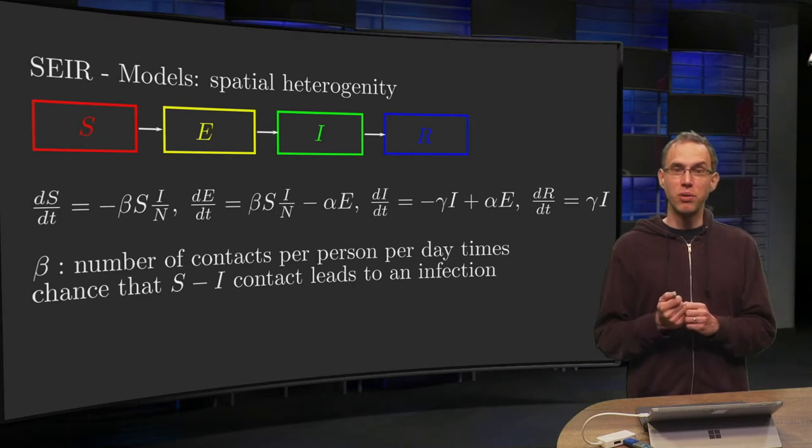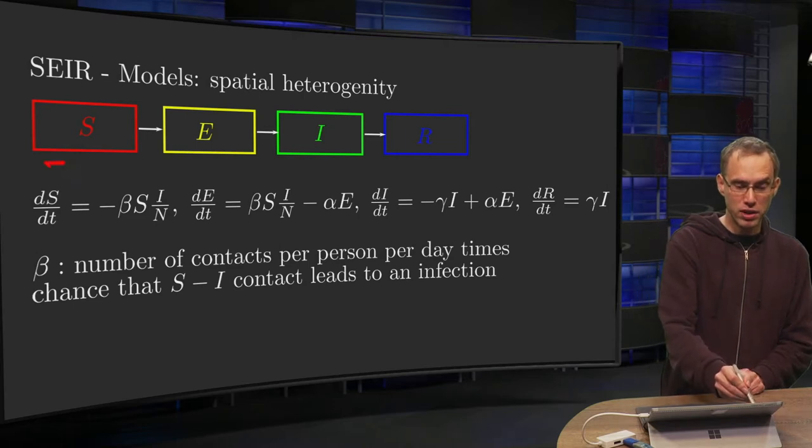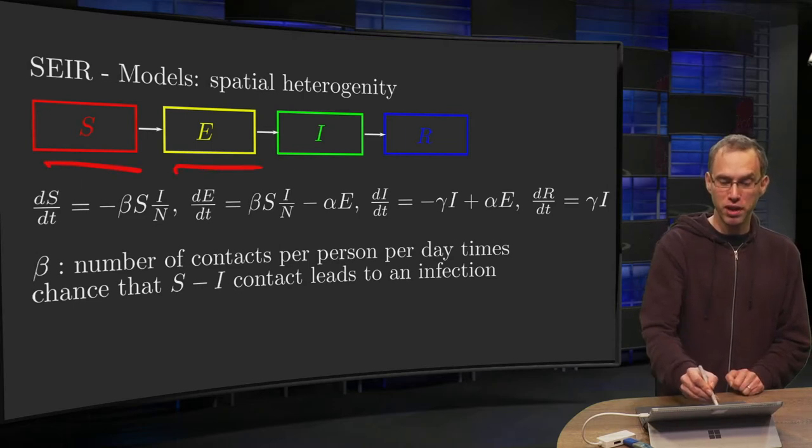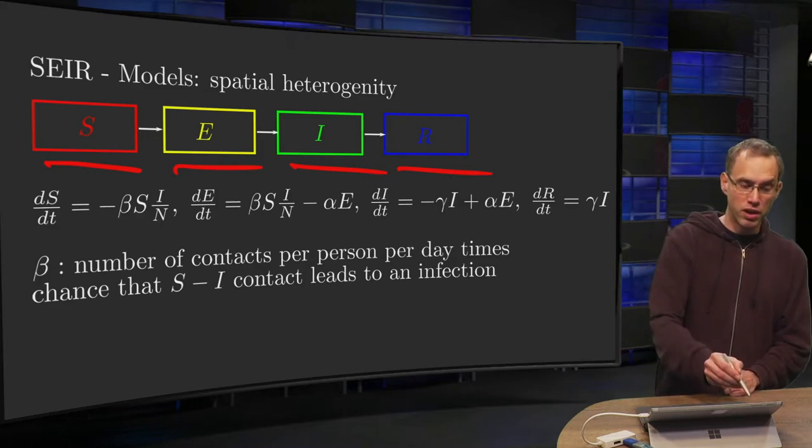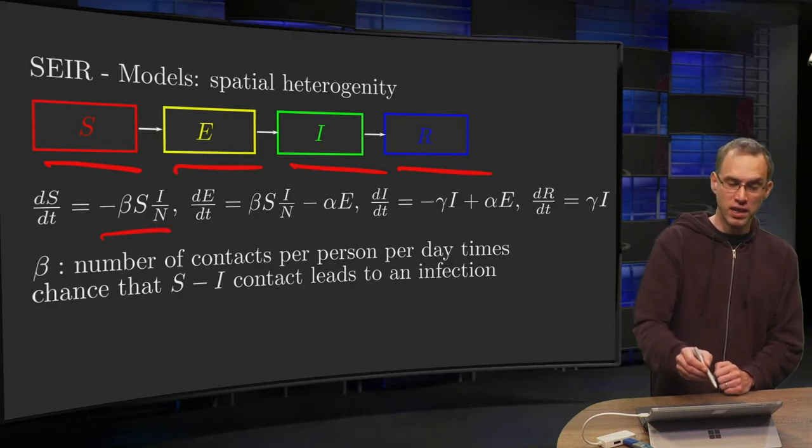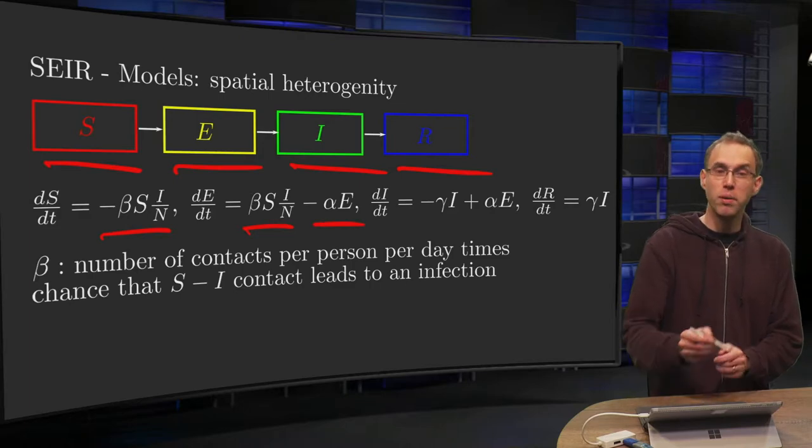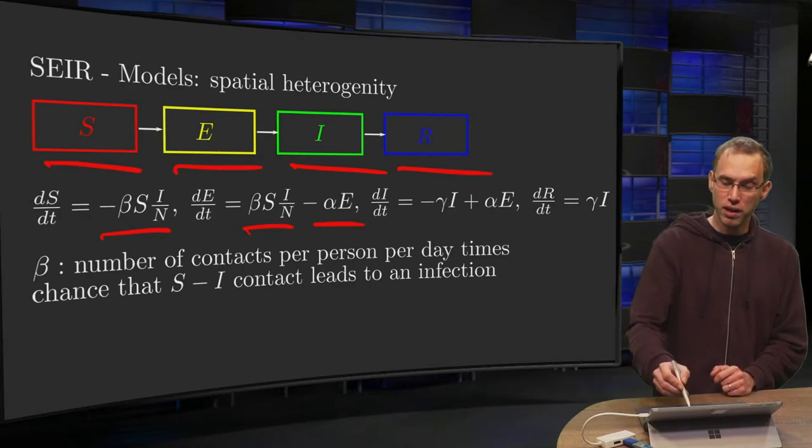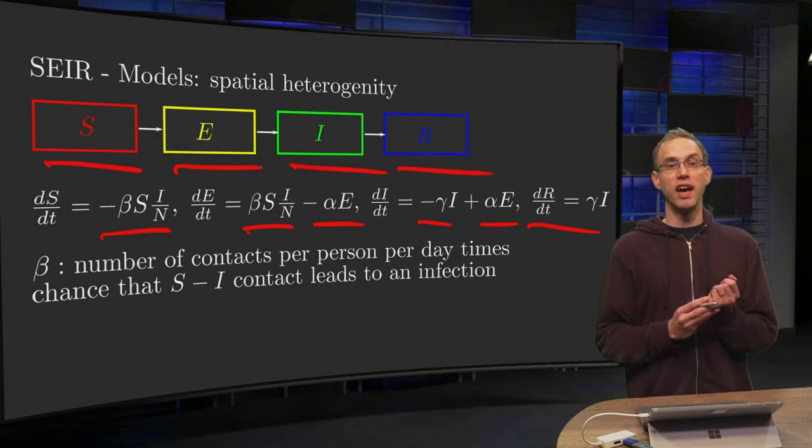First, let us take a look again at what was our model. We have a population subdivided in susceptibles, exposed, infected and recovered individuals. Susceptible moved to exposed at a certain rate. Exposed get population from the susceptible and lose population to the infected. Infected get population from the exposed and lose population to the recovered. And eventually everybody ends up in the set of the recovered.